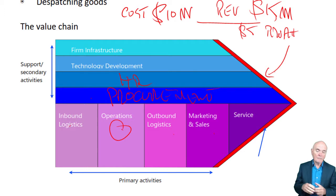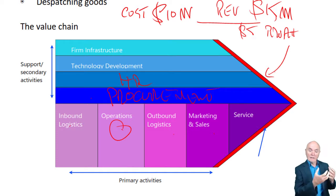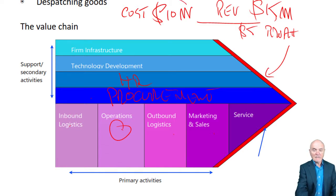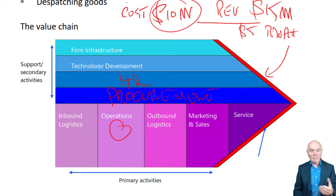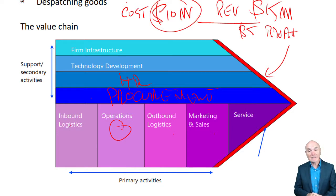Porter said, isn't it rather magical that by spending 10 million, other people called customers come and give you 15 million? Why don't they do it themselves and save 5 million? It must be because you're doing something they can't do or don't want to do — maybe because of expertise, economies of scale, or because what they pay you is actually less than what it would cost them to do it themselves.